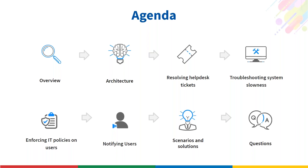First, we'll see how a technician can use remote control to assist users and resolve tickets. Second, we'll look at a common scenario — system slowness — and see how to use Desktop Central's tools to troubleshoot it. Third, we'll see options available in Desktop Central to enforce IT policies. Finally, we'll see how to alert users in an emergency situation such as a Microsoft Exchange server being down, followed by additional interesting scenarios from our support experience.